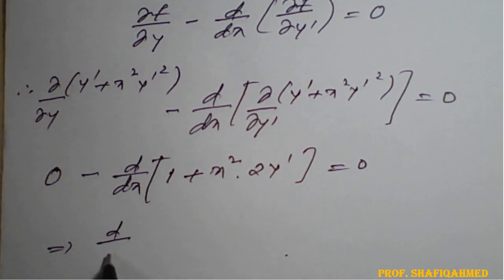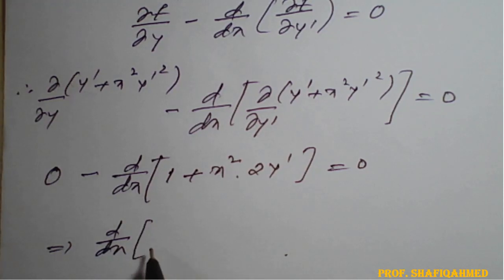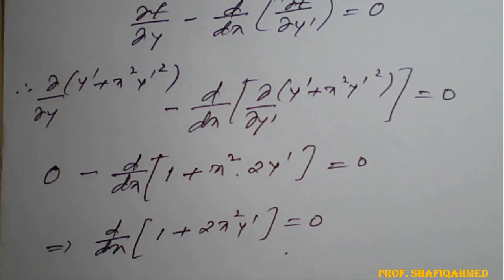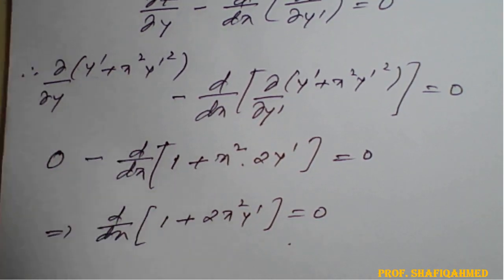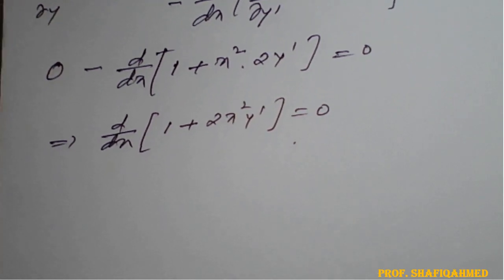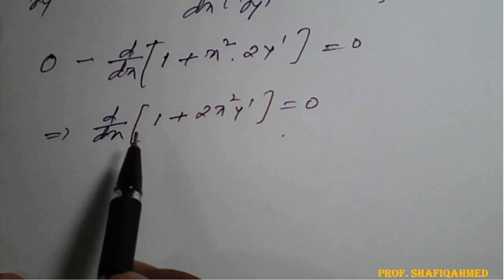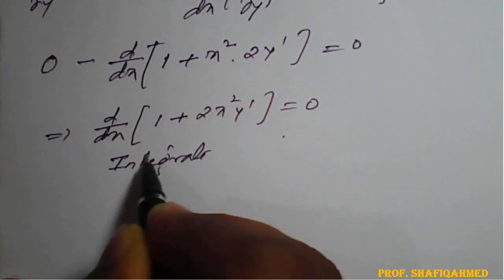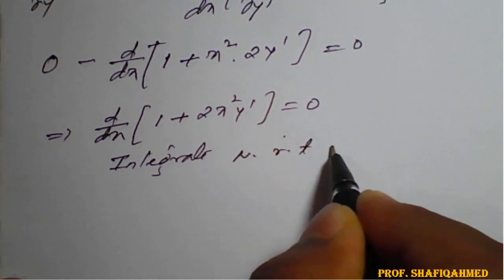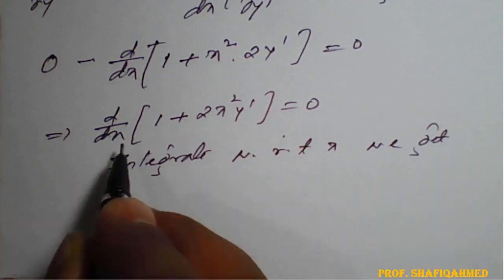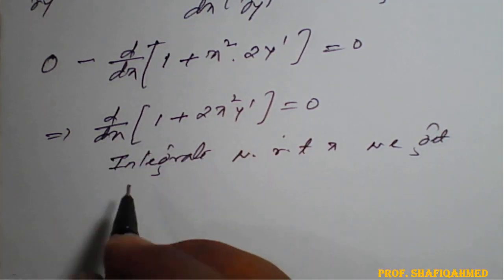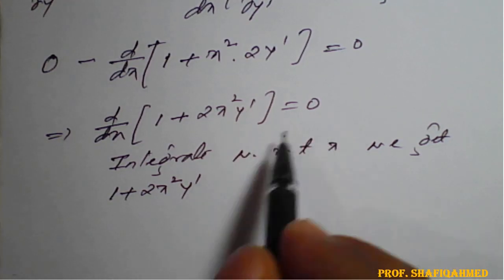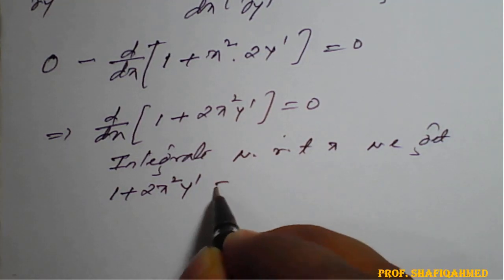This gives: d/dx(1 + 2x² y') = 0. To eliminate the d/dx operator, we integrate both sides with respect to x. Integrating the right-hand side introduces a constant c1. So we get: 1 + 2x² y' = c1, where c1 is a constant.